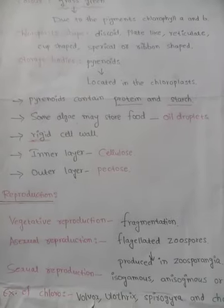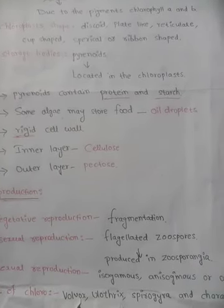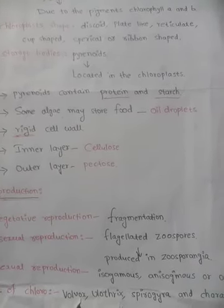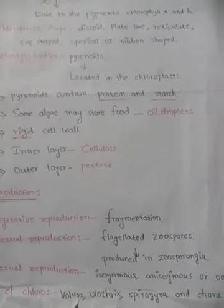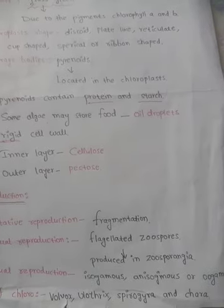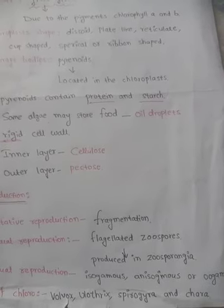Examples of Chlorophyceae are: Volvox, Ulothrix, Spirogyra, and Chara.